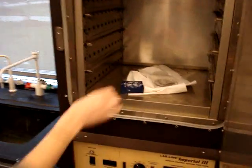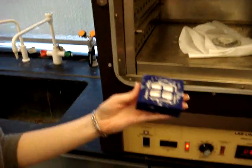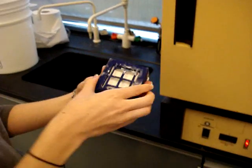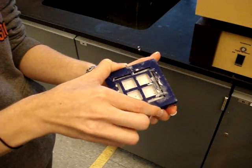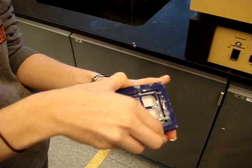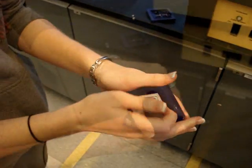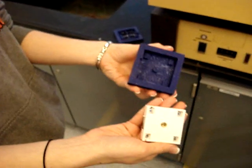After curing, the solid unit is removed from the oven and extracted from the casing. The completed unit is now ready to be handed over to the electrical team. The parts seen here should be fully functioning and after being electrically tested, can be attached to a bench setup as seen earlier to verify its functionality.